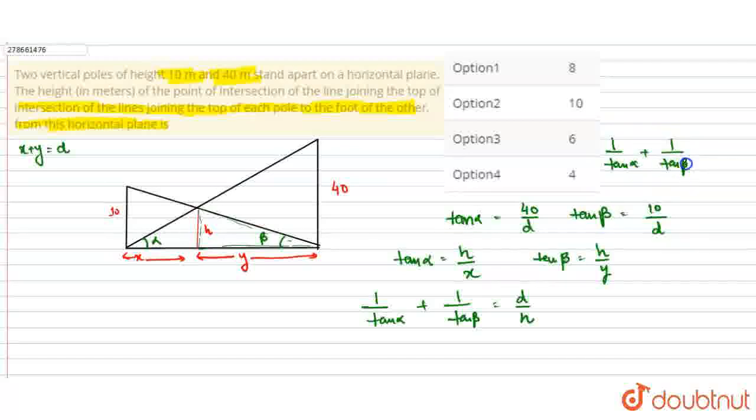So from these two, one upon tan alpha plus one upon tan beta will be d upon 40 plus d upon 10. This is what we'll get from both of these.